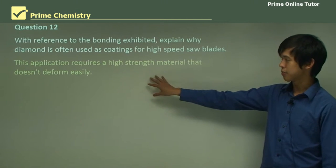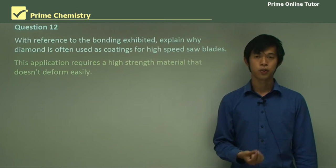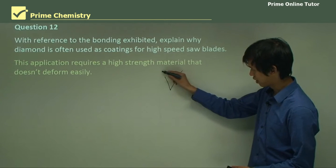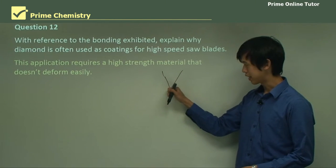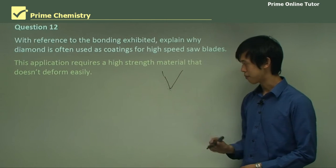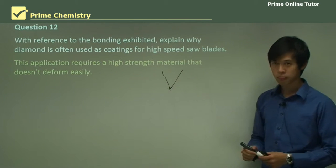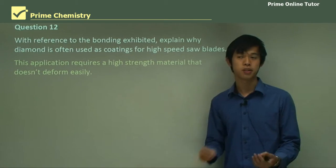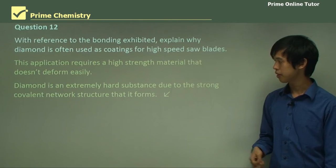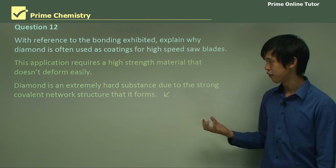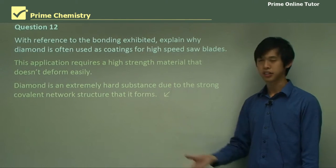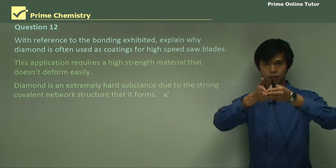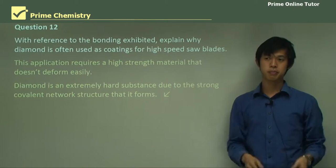Well, this application requires a high-strength material that doesn't deform easily. So you don't want it to deform because that's how blunting happens. As soon as something hits it, it might get a little bit blunt, and that's because of deformation. But what you want is you don't want it to get blunt. You want it to be as sharp for as long as possible. So diamond is an extremely hard substance due to the strong covalent network structure that it forms. So when you have a very sharp point, it's not going to deform as much as another substance.